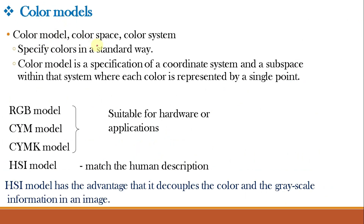Color models are also known as color space or color system. The purpose of a color model is to facilitate the specification of colors in some standard, generally accepted way. Precisely defined, a color model is a specification of a coordinate system and a subspace within that system where each color is represented by a single point. Color models are oriented towards hardware such as monitors and printers, or towards applications such as color graphics for animation. The most commonly used hardware-oriented models are the RGB model for color monitors and video cameras, and CMY and CMYK models for color printing.